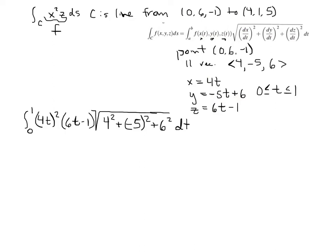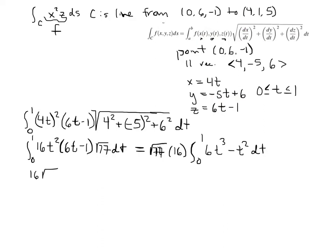And then we integrate. So I've got a 4t squared. That would be a 16t squared times 6t minus 1. And then underneath the square root, I'm going to have 16 plus 25 plus 36. That gives me a root 77. So let's see. I can factor out a root 77. Oops. That should be a 77. I can also factor out a 16. And then integrate from 0 to 1. 6t cubed minus t squared.